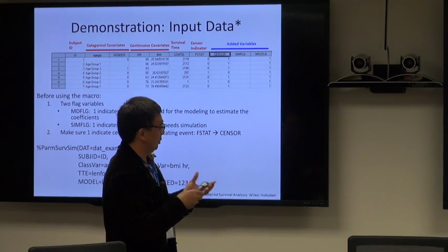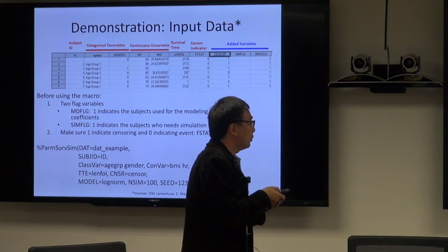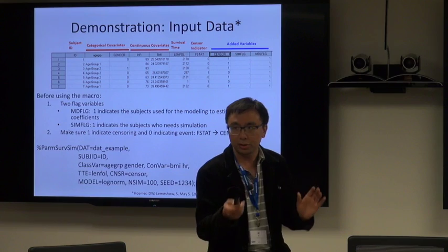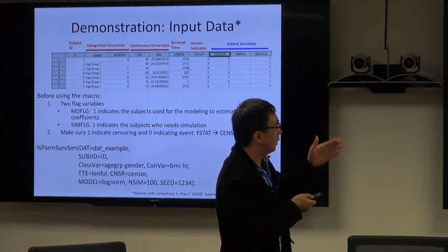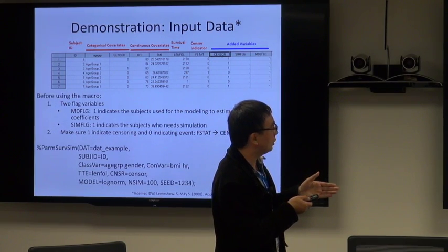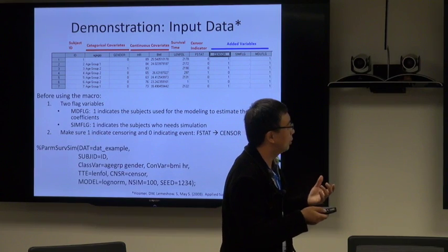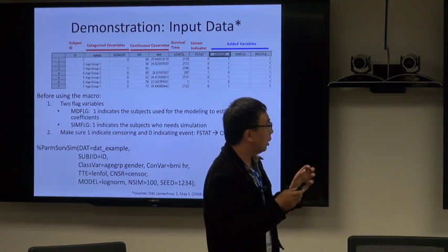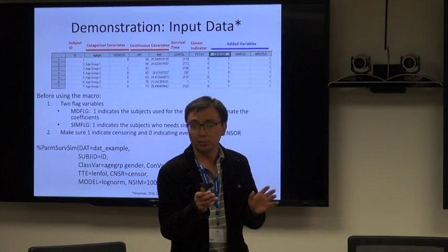Let's talk about how to use this macro. That's the input dataset, which basically is a very common regular survival dataset. We have our subject ID, we have the survival time, censoring indication. In addition, we have covariates - we have categorical covariates and also continuous covariates.